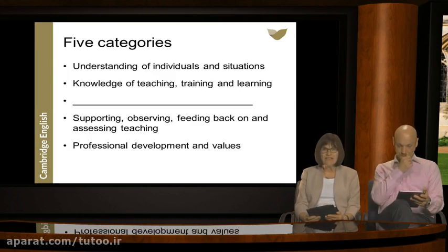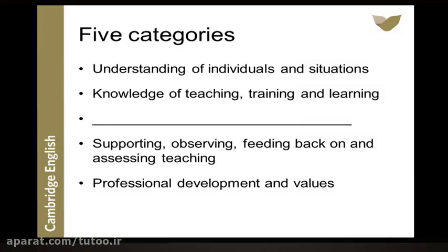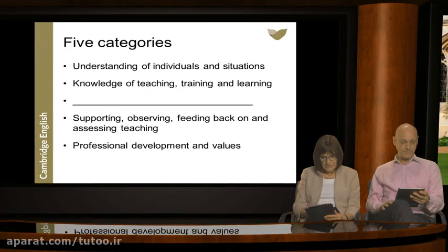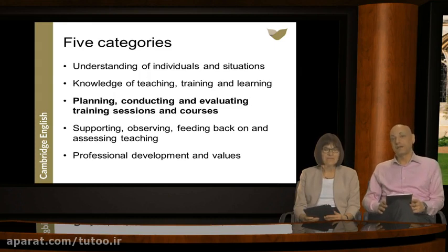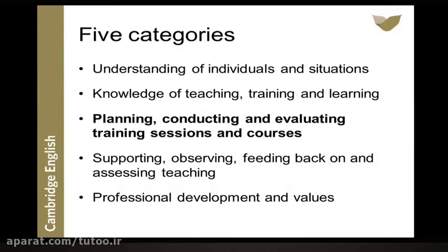Following consultation and discussion with a great many trainers and expert consultants around the world, these are four of the five categories in the trainer framework. What do you think the missing one is? Participants suggested: mentoring, assessing, adapting material, planning, and content. As many of you predicted, the third category is about training sessions and courses — the competencies involved in planning, conducting, and evaluating them. These are the five categories which reflect the competencies needed by a teacher trainer.